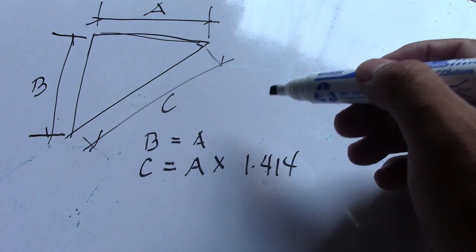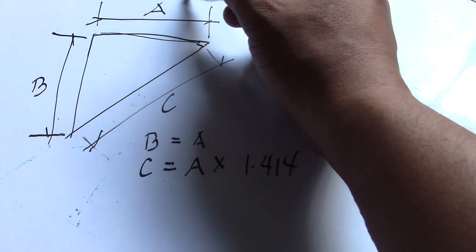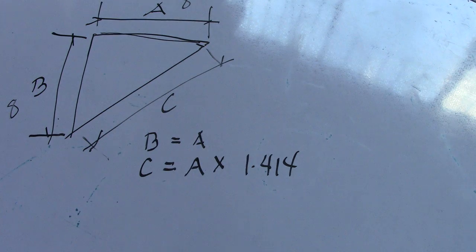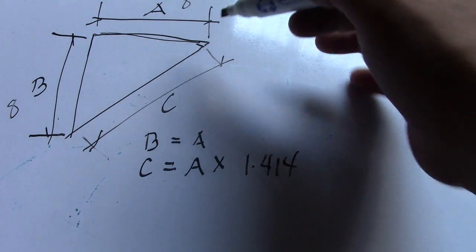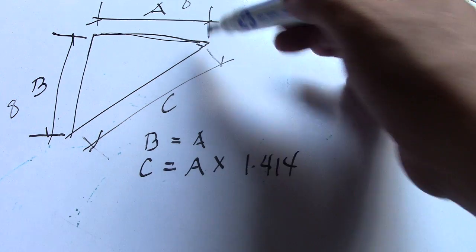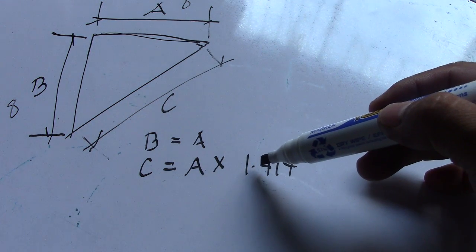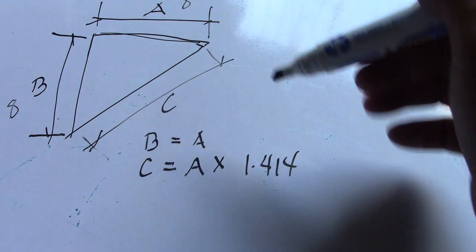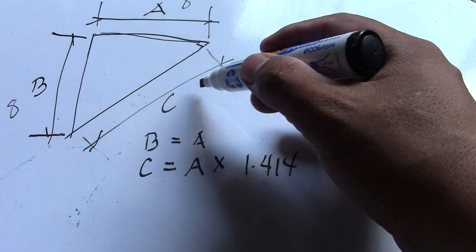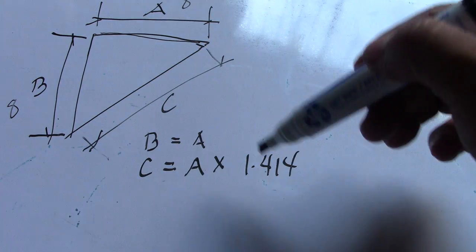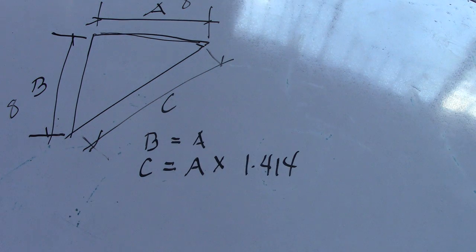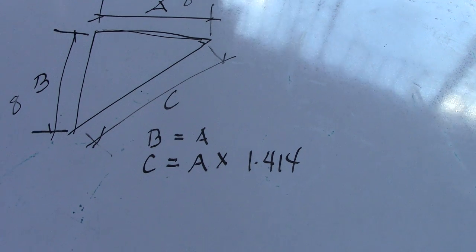Let's say we have A equals 8 and B equals 8, so it means this is square. So 8 multiplied by 1.414 equals the answer for dimension C. Or B multiplied by 1.414 gives us letter C. So this is an iron bracket.